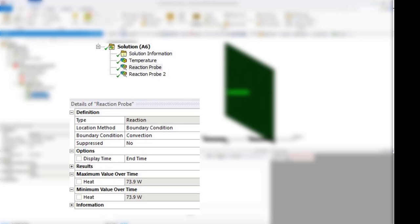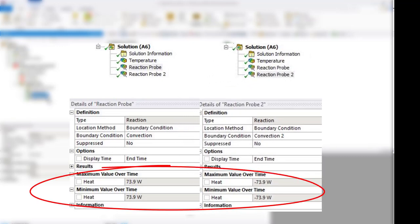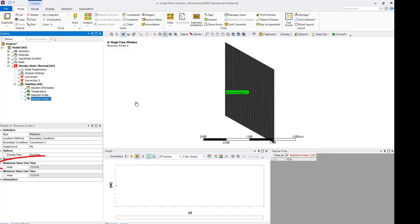If we sum up the heat in watts reported under these two reaction probes, we can see that the heat balance is zero. By examining one reaction probe, we can see the amount of heat transferred through the pane of glass. This concludes the demo.